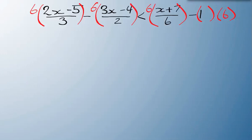After that, we're going to do some cancelling. 3 goes into there once, comes out of there 2 times. 2 goes into there once, goes into there 3 times.